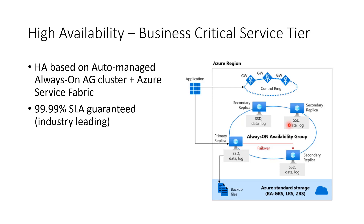When it comes to the Business Critical service tier, the architecture is different since it is based on locally attached SSDs. The local disks of the VMs carry both the data and the log files, unlike General Purpose where these were placed on remote storage. We're using an Always-On availability group with four replicas for each Business Critical instance, and one of these replicas is a readable secondary that you get free of charge. The high availability in this case is based on an auto-managed Always-On availability group cluster plus Azure Service Fabric. It also provides four nines of SLA guaranteed — the same as the General Purpose service tier — which is the leading number amongst all cloud database providers.